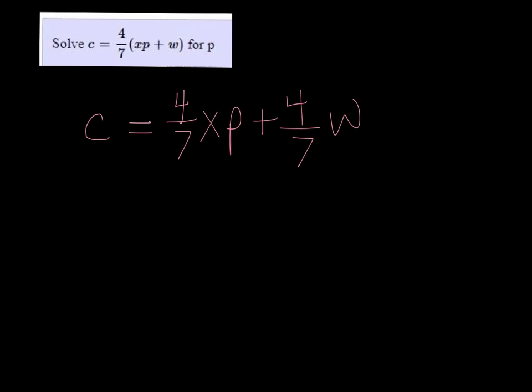We're trying to get p by itself, so let's subtract the 4/7 w on both sides.